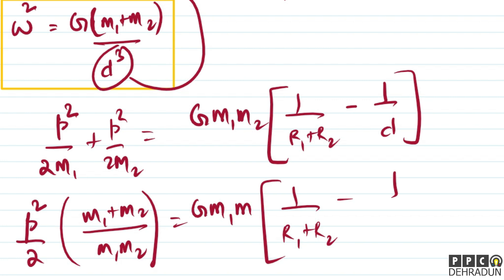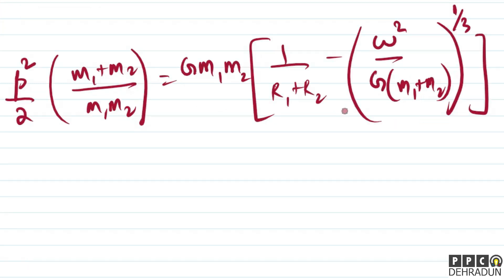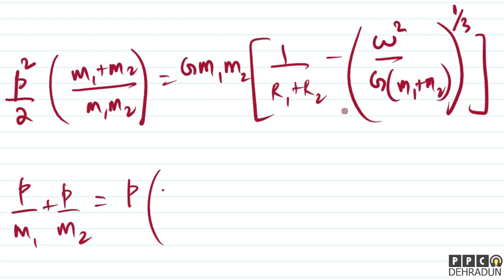We already have 1/d³ from the centripetal equation: 1/d³ = ω²/[G(m1+m2)]. So we write 1/d = [ω²/(G(m1+m2))]^(1/3). What we need is p·(m1+m2)/(m1·m2), which is basically v1+v2, the relative velocity.